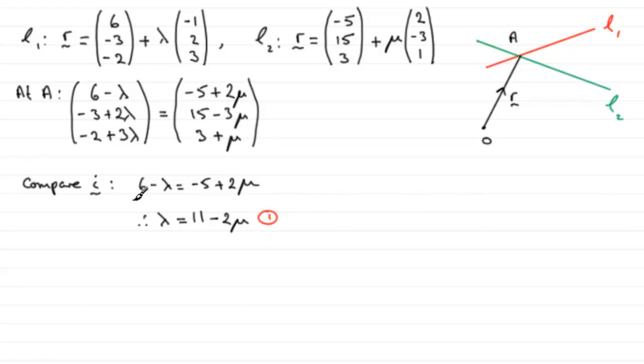I need another equation, and I'm going to go for the K components. So if we compare the K's, we get minus 2 plus 3 lambda, and that equals 3 plus mu. And for this one, I'm going to make mu the subject by subtracting 3 from both sides. So therefore, I've got mu equals 3 lambda, and then I've got minus 2 minus another 3, which is minus 5. So that's my second equation.